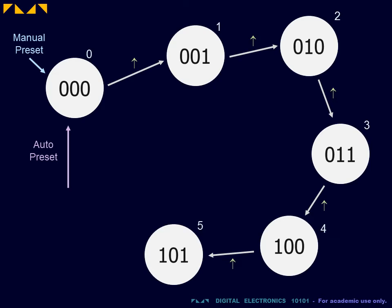We will obtain a modulo 6 counter by forcing an auto preset from the appropriate state. As for the manual preset, this auto preset will be obtained using the asynchronous reset of each flip-flop.